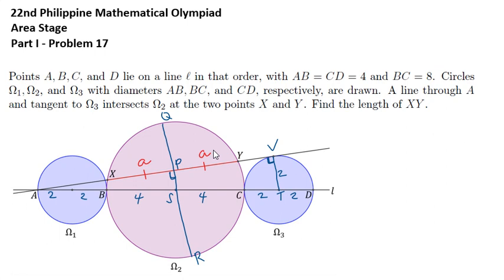Now, if we call the length PS, B, then PQ is 4 minus B, because SQ is a radius and its measure is 4 units. SR is also a radius, so this is also 4.